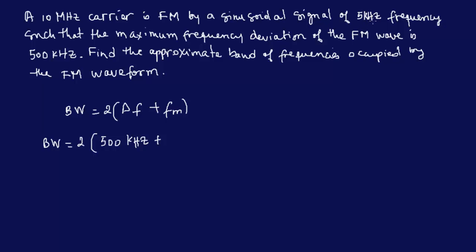To calculate the bandwidth for frequency modulation signals, the frequency deviation is 500k plus your maximum frequency, which in this case is 5k. The bandwidth is 1010. We have to calculate the bandwidth first and then add or subtract the carrier frequency to get the approximate band of frequencies.